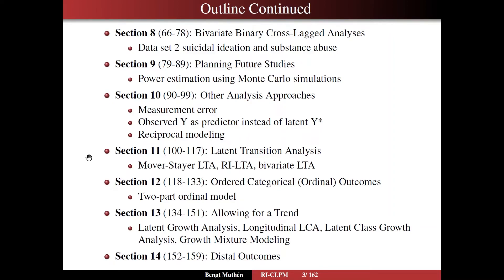In section 12, we turn away from the binary case and look at ordered categorical ordinal outcomes — polydamous variables — working with not only the usual multivariate probit model, but also a new two-part ordinal model introduced in this WebTalk, which turns out to be very useful in cases with ordinal outcomes.